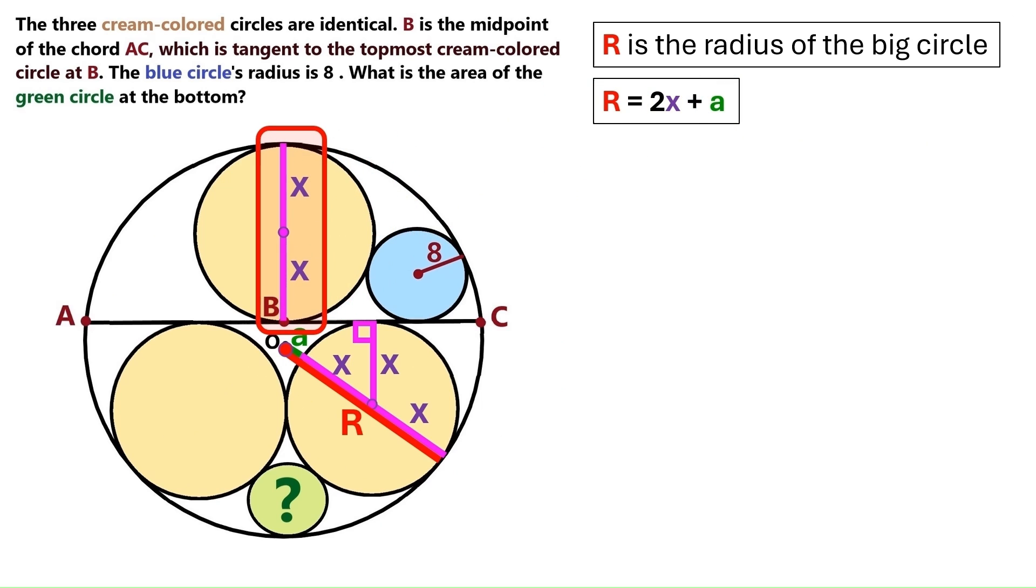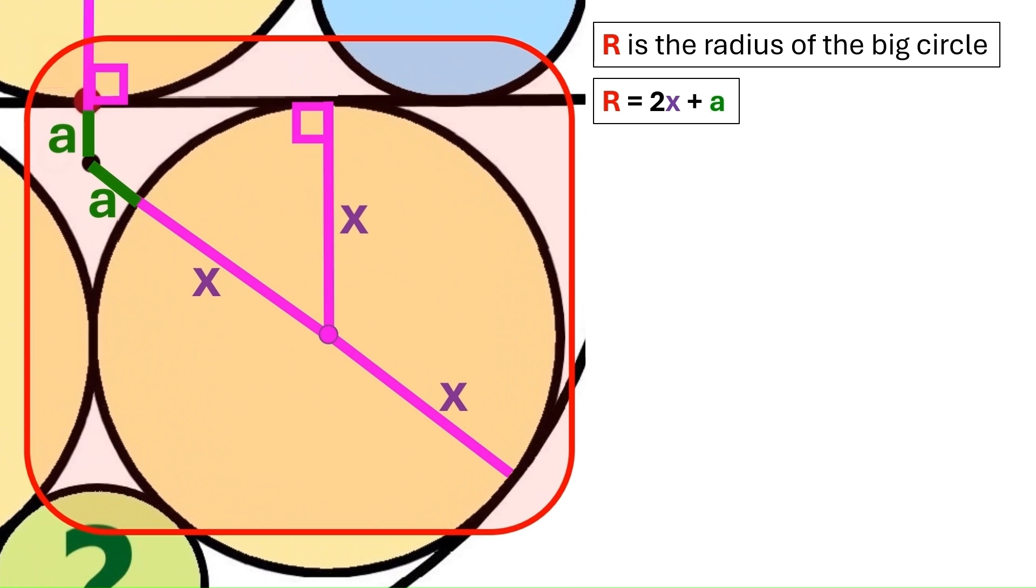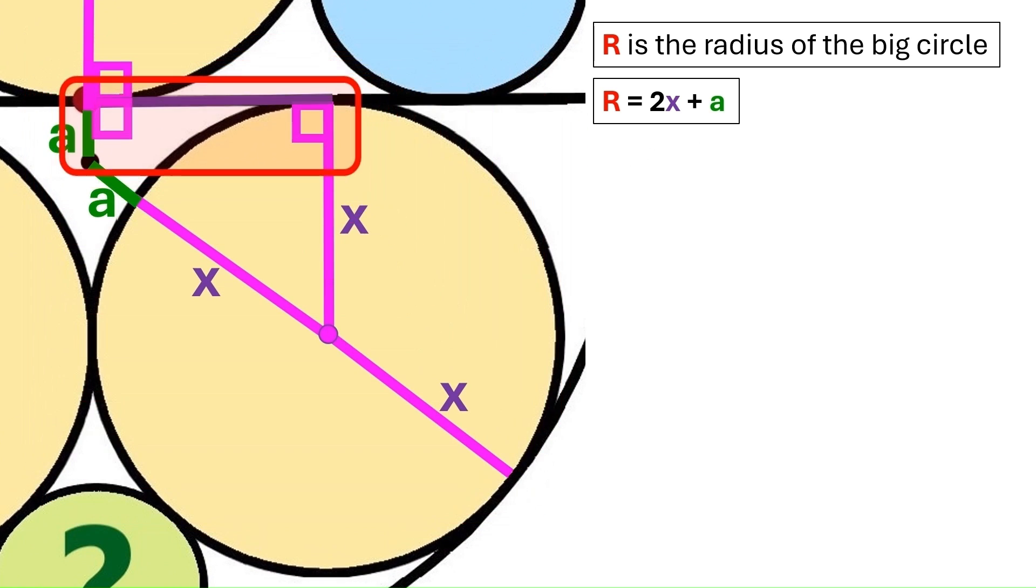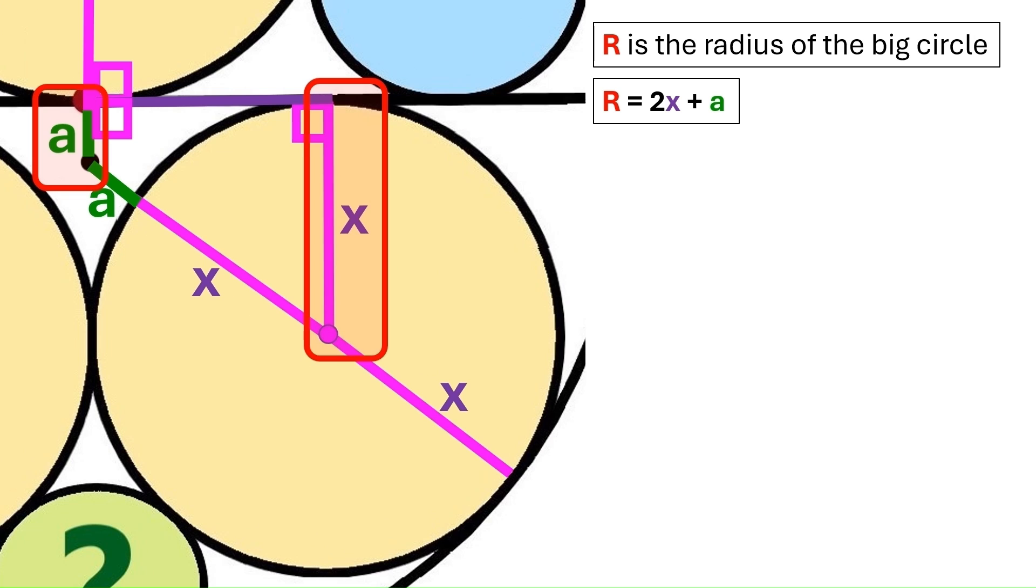Now let's draw these two radii for the top cream-colored circle here. We know this is a right angle because it's the point of tangency, and we also know that this entire distance is capital R, which equals 2x plus a. So this little green distance down here must be a. Now I'll take this part and zoom in so that you can see what's going on better. We've got right angles here, so we can figure out that this x and this a are parallel. That means we can take this x and copy it onto here, and this part here has to be x minus a.